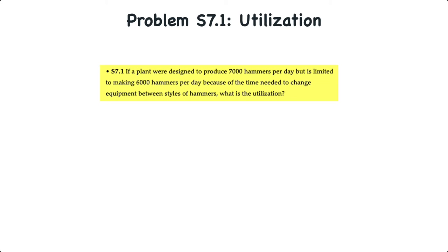If a plant were designed to produce 7,000 hammers per day but is limited to making 6,000 hammers per day because of the time needed to change equipment between the style of hammers, what's the utilization?